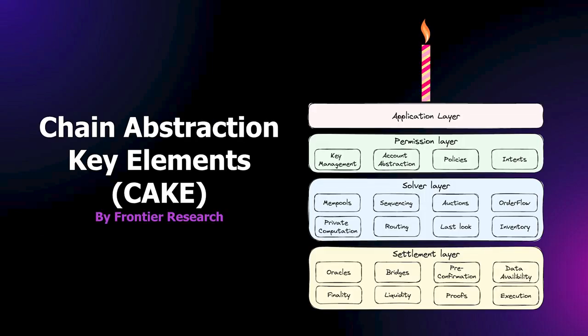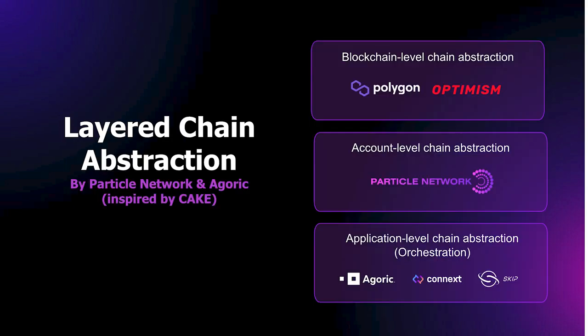A few implementations of this layered approach: the first big one was from Frontier Research — the CAKE framework, which was the first framework and mental model for understanding the different types of technologies that compose chain abstraction. Then what we proposed with Agoric is this layered chain abstraction framework, which focuses on chain abstraction-specific solutions and how to categorize their products. At the blockchain level you have things like Polygon's AggLayer or Optimism Superchain. At the account level you have Particle Network's Universal Accounts. And at the application level — orchestration — you have things like the Agoric Orchestration API.